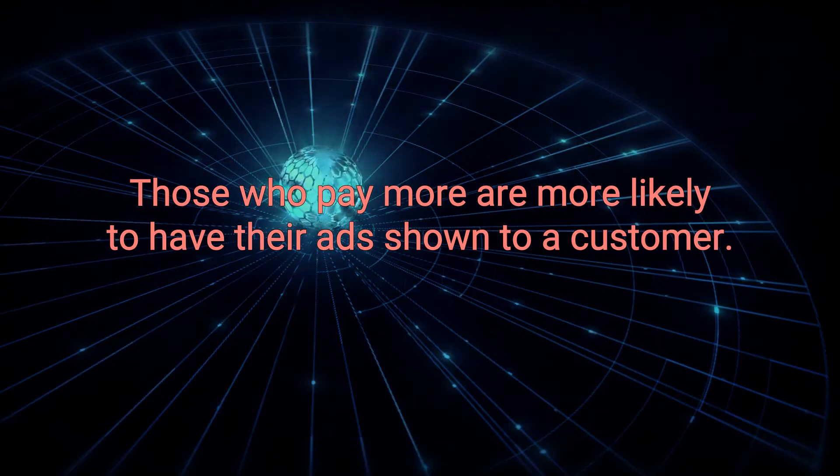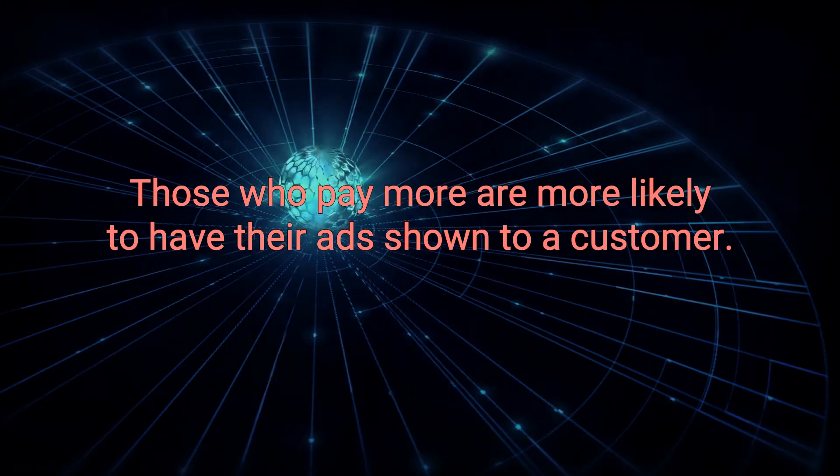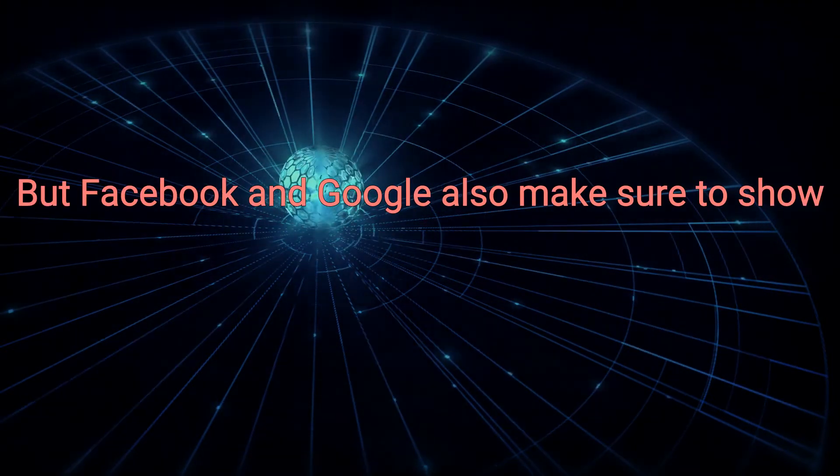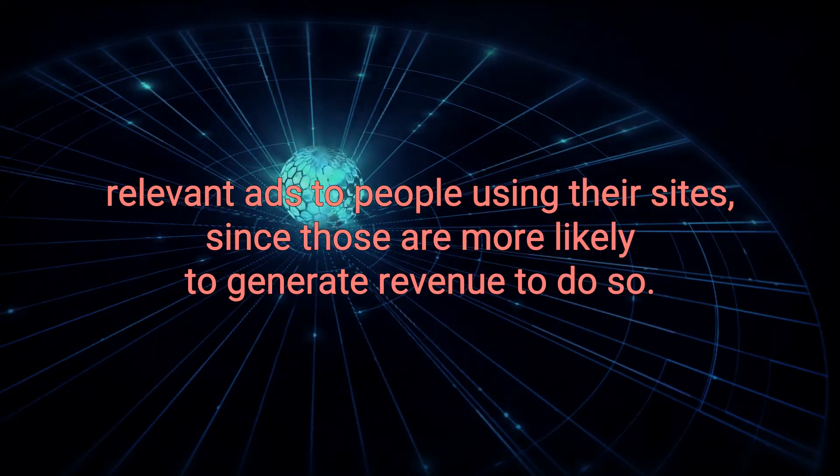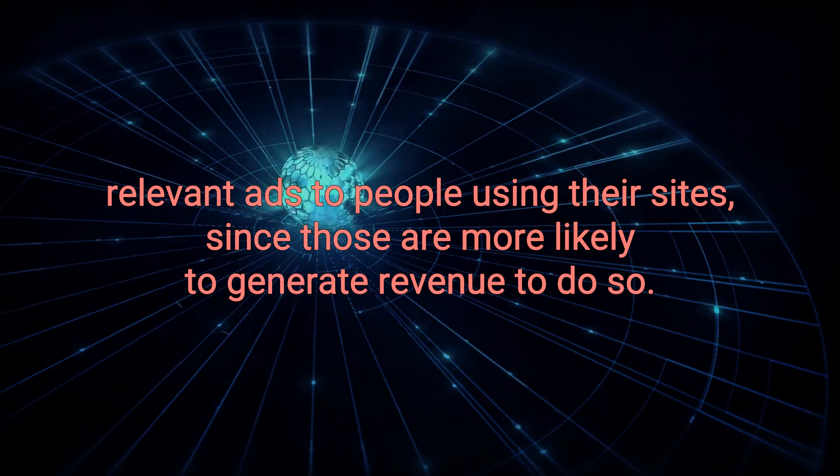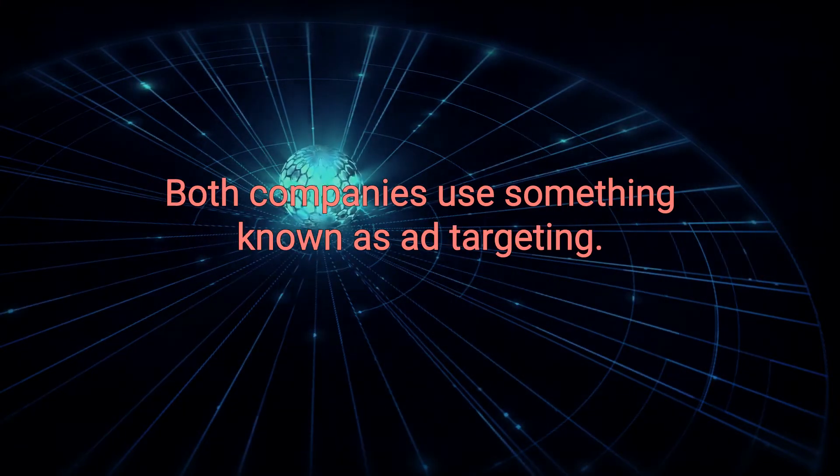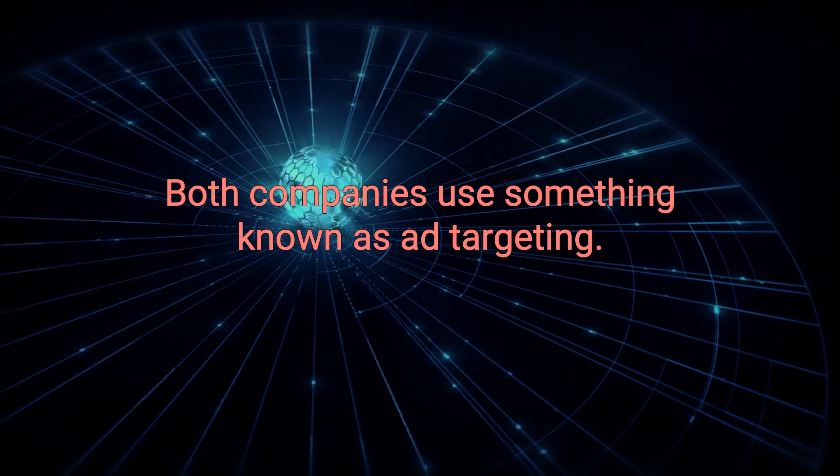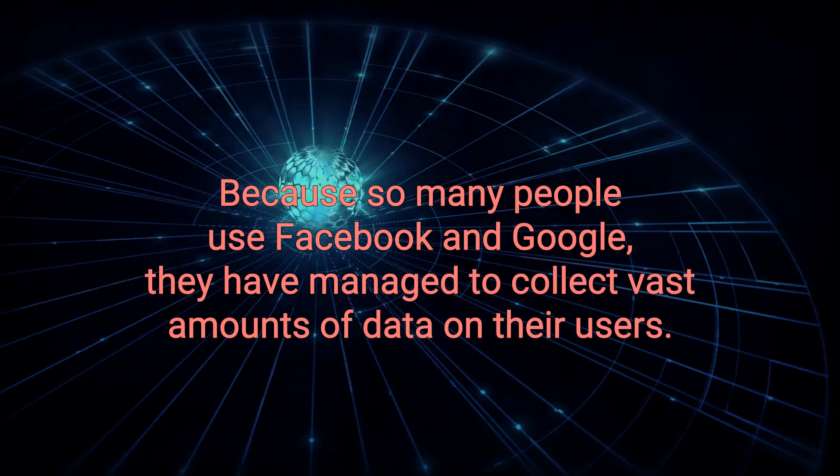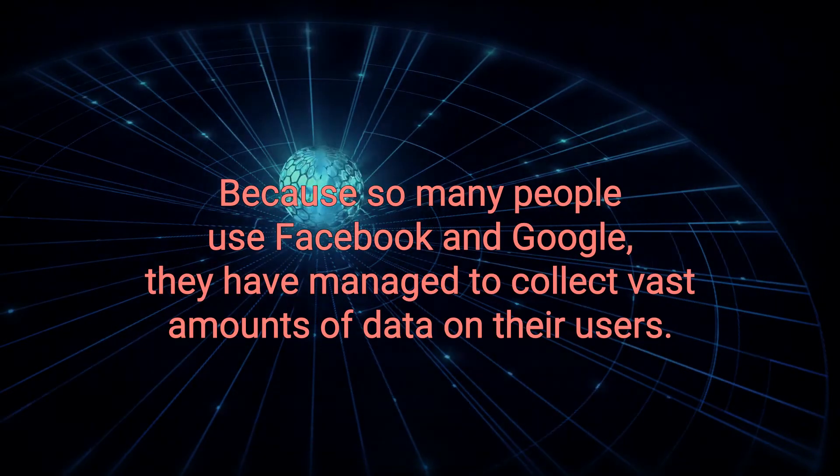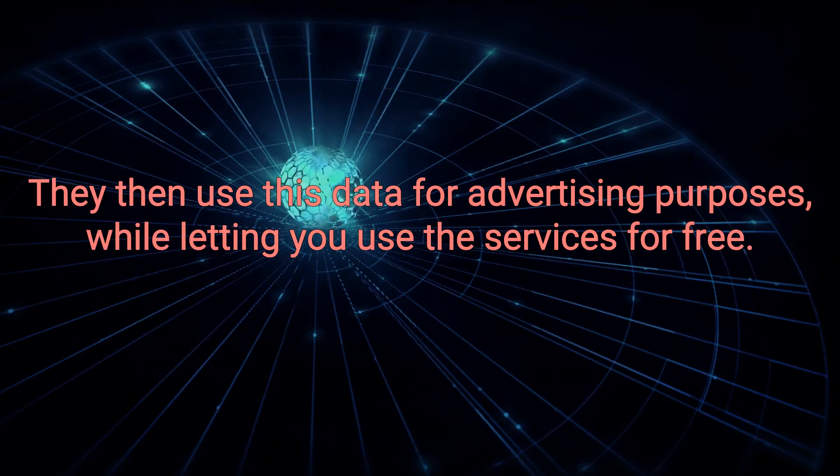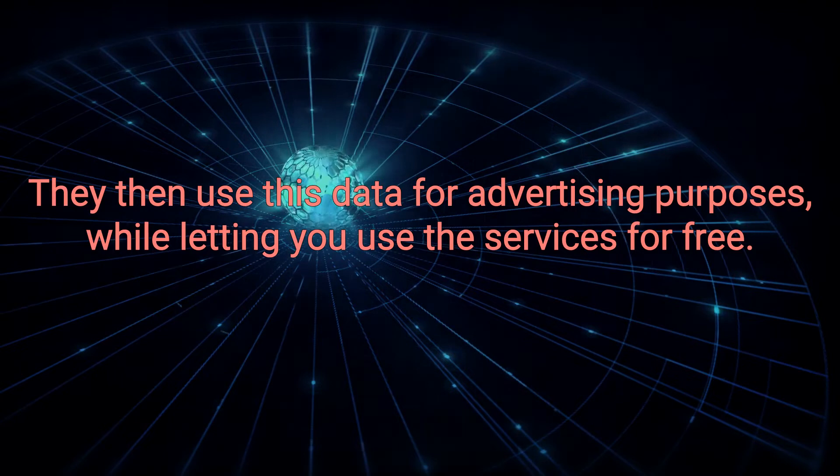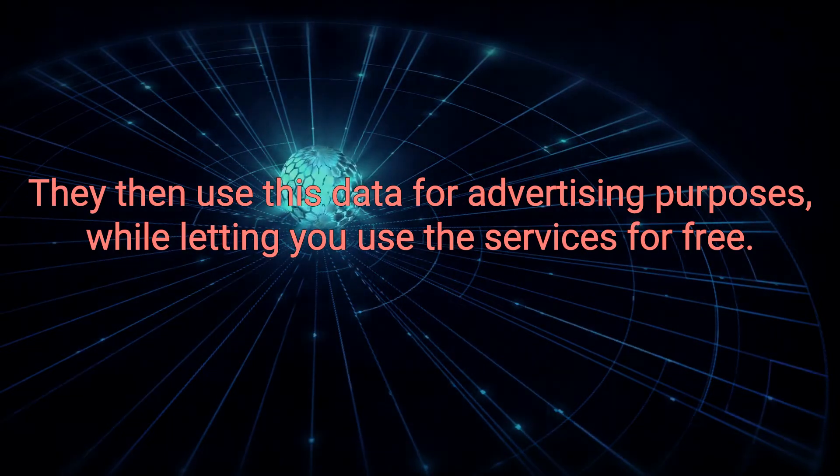Those who pay more are more likely to have their ads shown to a customer. But Facebook and Google also make sure to show relevant ads to people using their sites, since those are more likely to generate revenue. To do so, both companies use something known as ad targeting. Because so many people use Facebook and Google, they have managed to collect vast amounts of data on their users. They then use this data for advertising purposes, while letting you use the services for free.